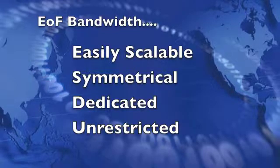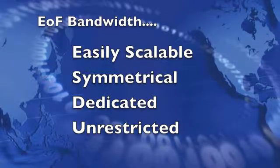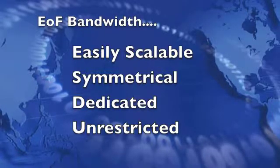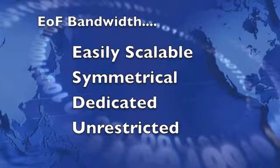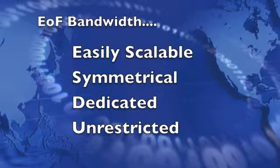Ethernet over fiber bandwidth is easily scalable up to the maximum speed of your installed port — symmetrical 100 Mbps in both the upload and download directions. This is sometimes known as 100 by 100 Mbps bandwidth.